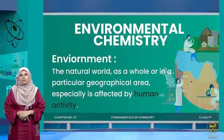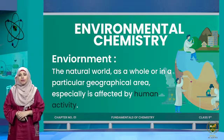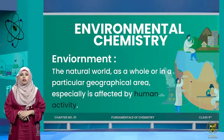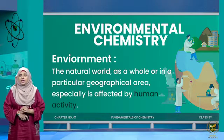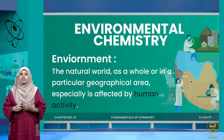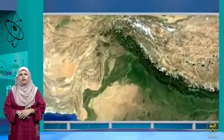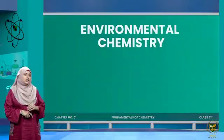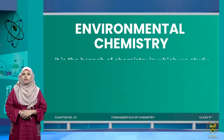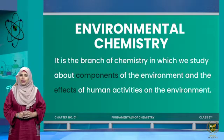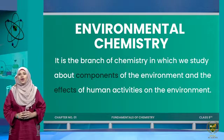Now let's talk about environmental chemistry. Environment basically means our surrounding — the natural world around us, and particularly the specific geographical area which is affected by human activity. For example, if we live in Pakistan, Pakistan is our environment. The definition of environmental chemistry is: it is the branch of chemistry in which we study the components of environment and the effect of human activities on the environment.